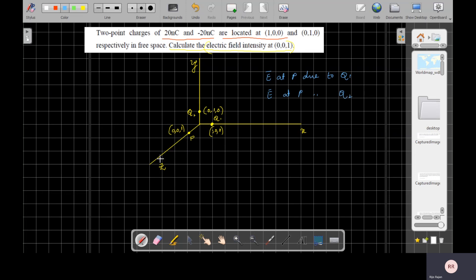We know the way to find the electric field intensity at P. For that you have to calculate what is the distance between Q1 and P and also you have to find the distance between Q2 and P. Then you have to use the formula for E.